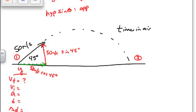What's 50 cosine of 45? Times 50, huh? 35.35. 35.35? Okay. And this is also 35.35. So this is the initial velocity in the y direction. 35.35 meters per second.